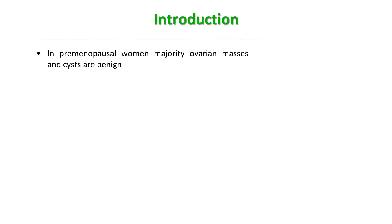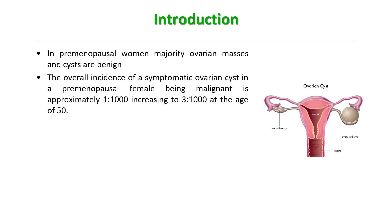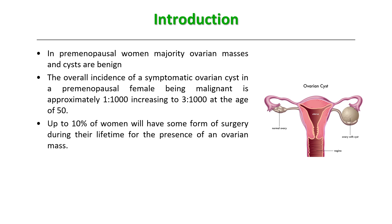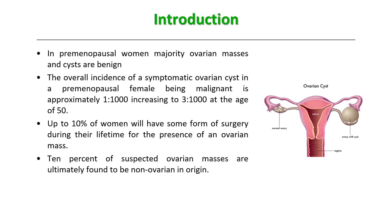Let's begin with the introduction. In pre-menopausal women, the majority of ovarian masses and cysts are benign. The overall incidence of a symptomatic ovarian cyst in a pre-menopausal female being malignant is approximately 1 in 1000, increasing to 3 in 1000 at age 50. Up to 10% of women worldwide will have some form of surgery during their lifetime for an ovarian mass. Also, 10% of suspected ovarian masses are ultimately found to be non-ovarian in origin — such as appendicular mass, para-ovarian cyst, or a subserous fibroid.